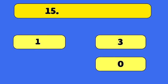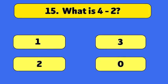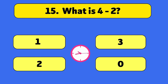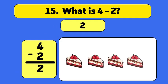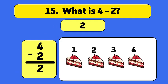What is 4 minus 2? The answer is 2. We start with 4 cakes and take away 2. 1, 2. We have 2 cakes.